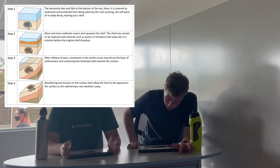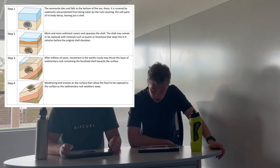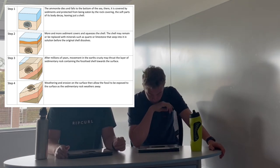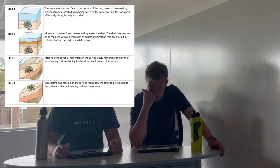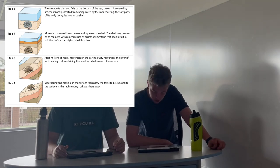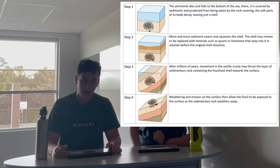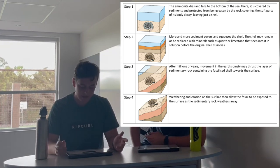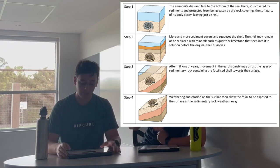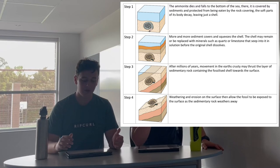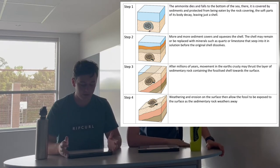Next, we describe the process of fossilization, which occurs in four main stages. First, death and rapid burial: the animal dies, quickly falls to the ocean floor or a low point, and is covered by sediments like sand, which prevent it from being eaten. The soft parts decay, leaving a shell or exoskeleton. Second, mineral replacement: more sediments cover the shell, and minerals such as limestone and quartz seep in as the original shell dissolves. Third, uplift of rock layers: over millions of years, Earth surface movements cause the sedimentary layer containing the fossil to rise. Fourth, erosion exposes the fossil as weathering erodes the surrounding sedimentary rock.